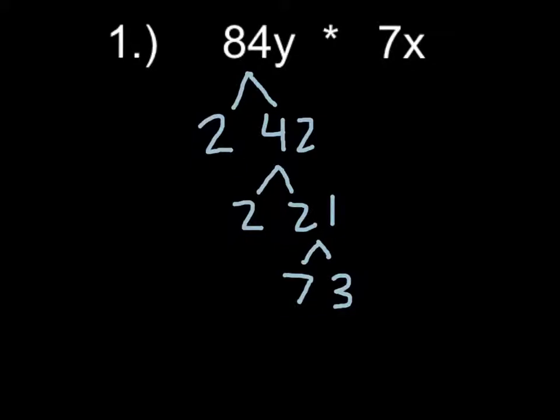To start off, 84y divided by 2 is 42. 42 can be simplified, so 42 divided by 2 is 21. These 2s can't be simplified anymore. Then 21 simplified is 7 and 3.